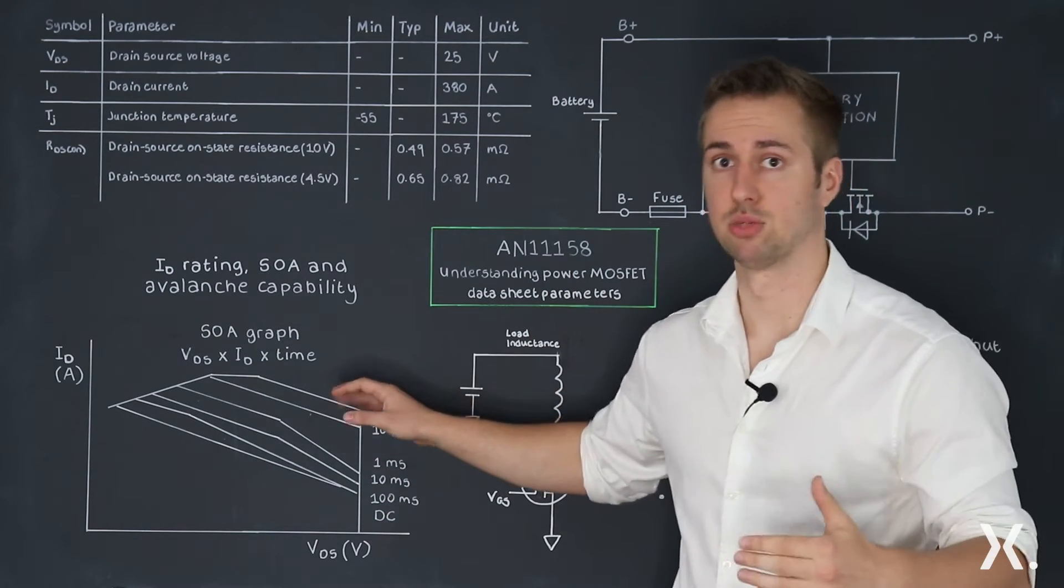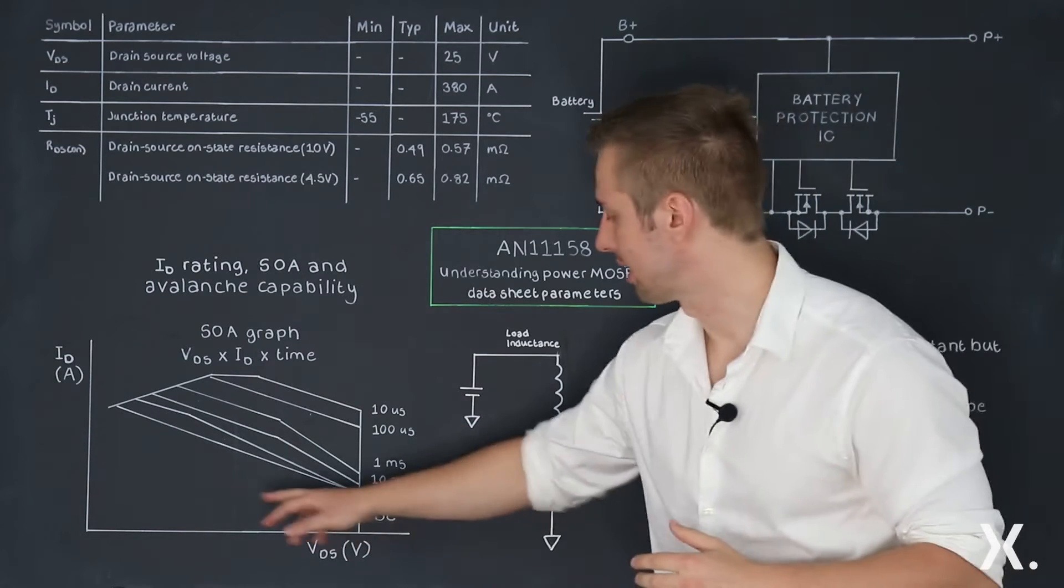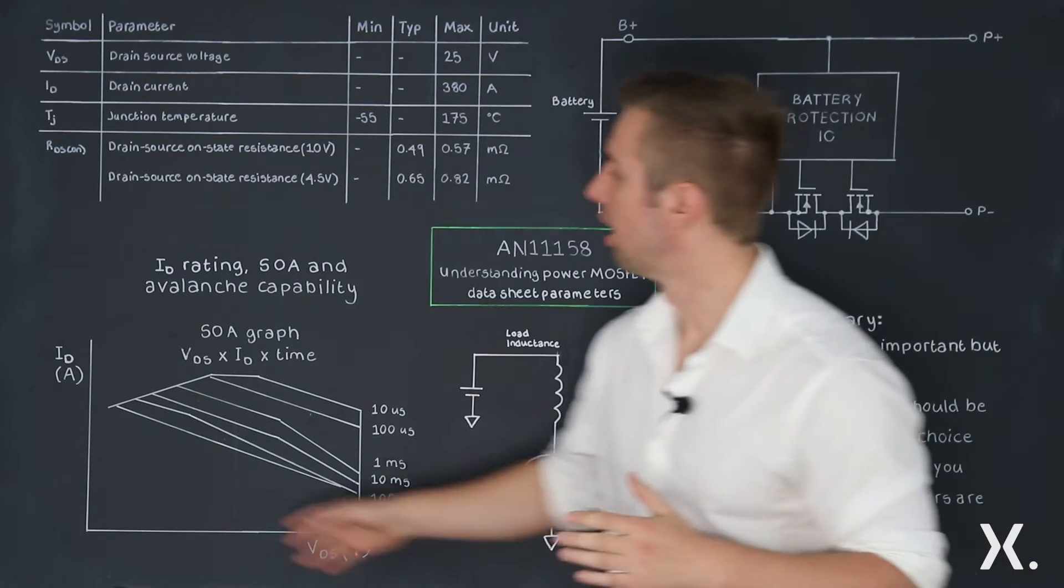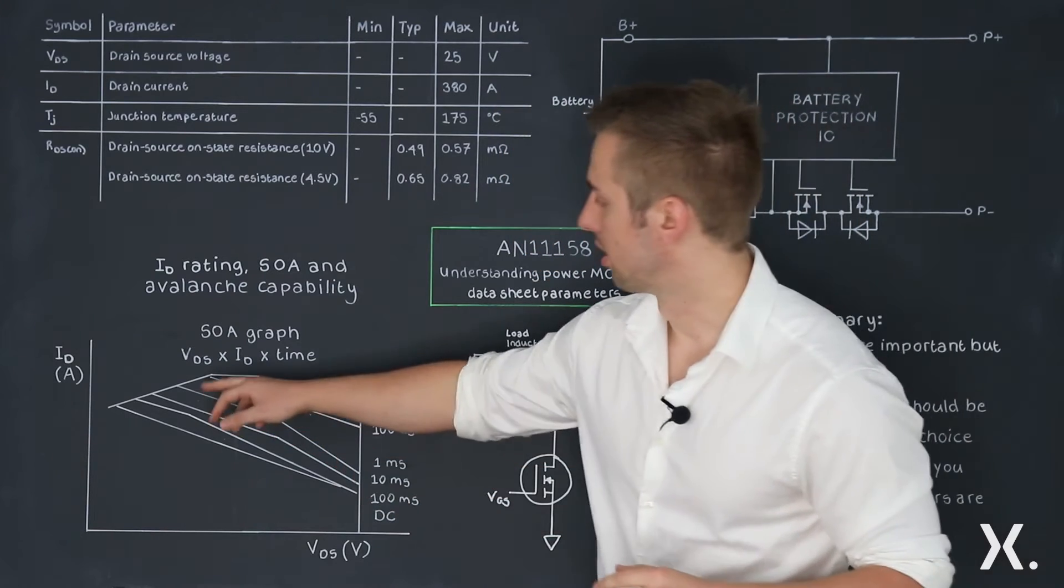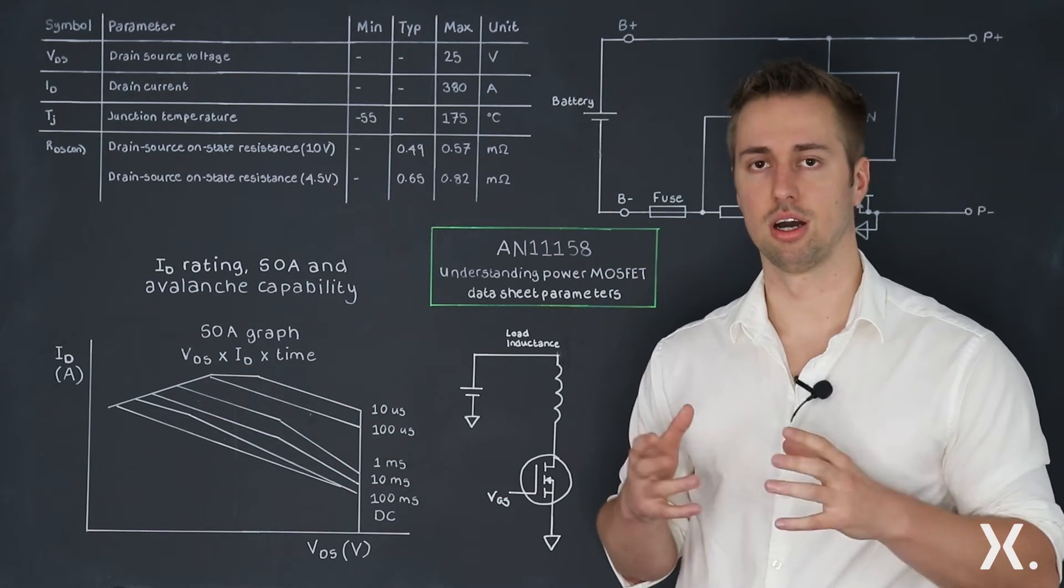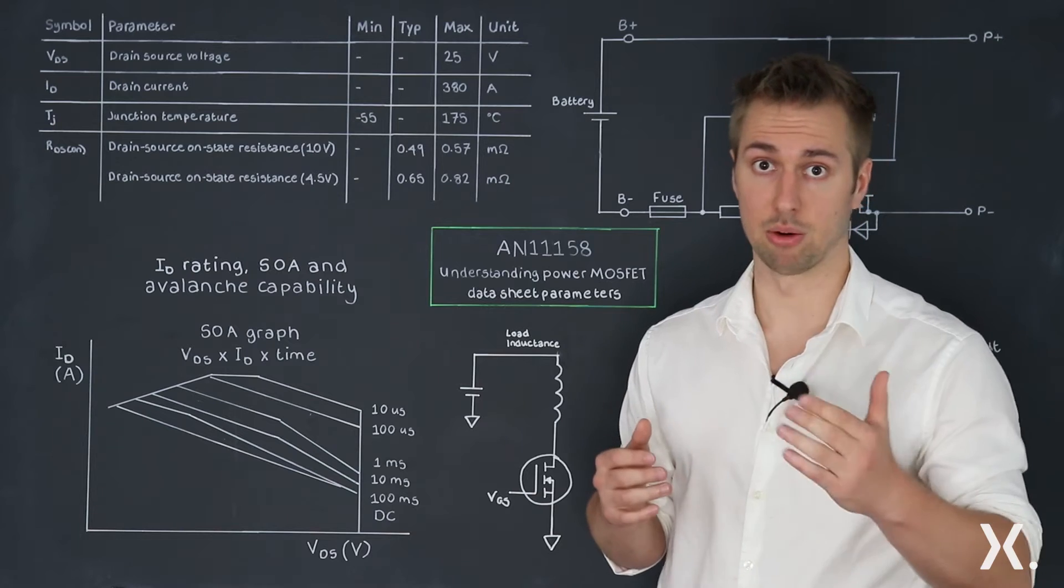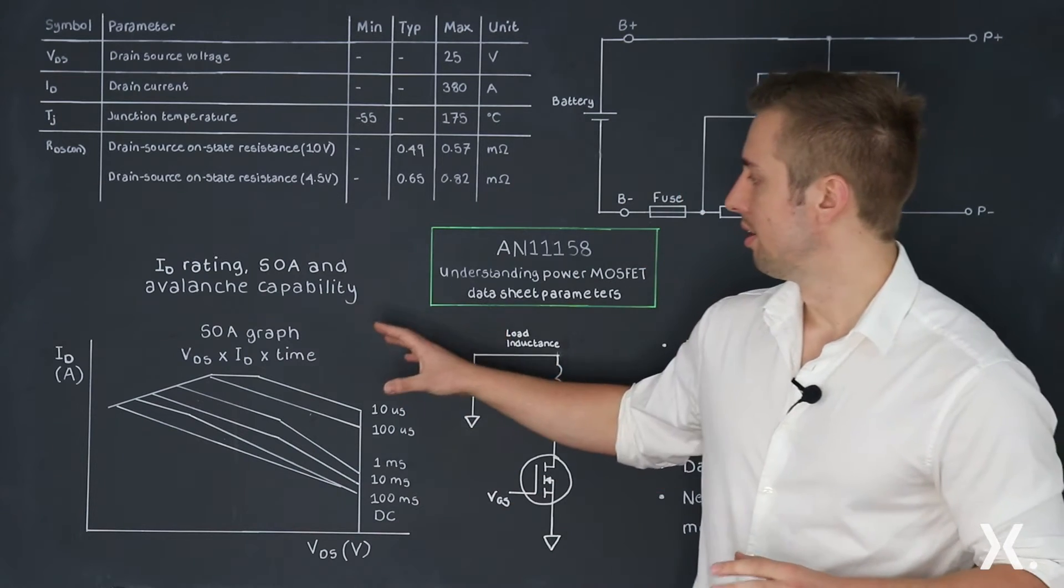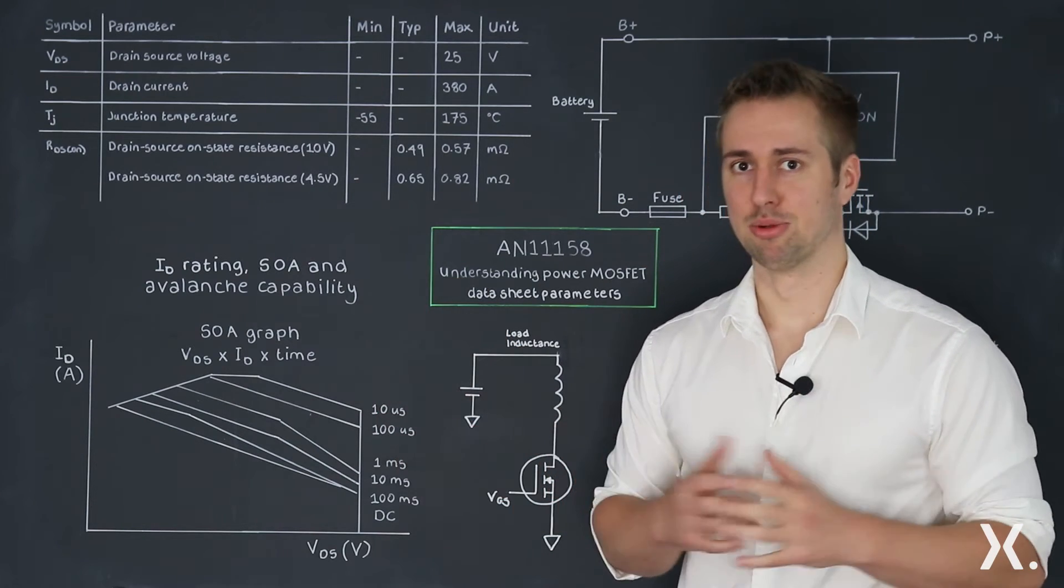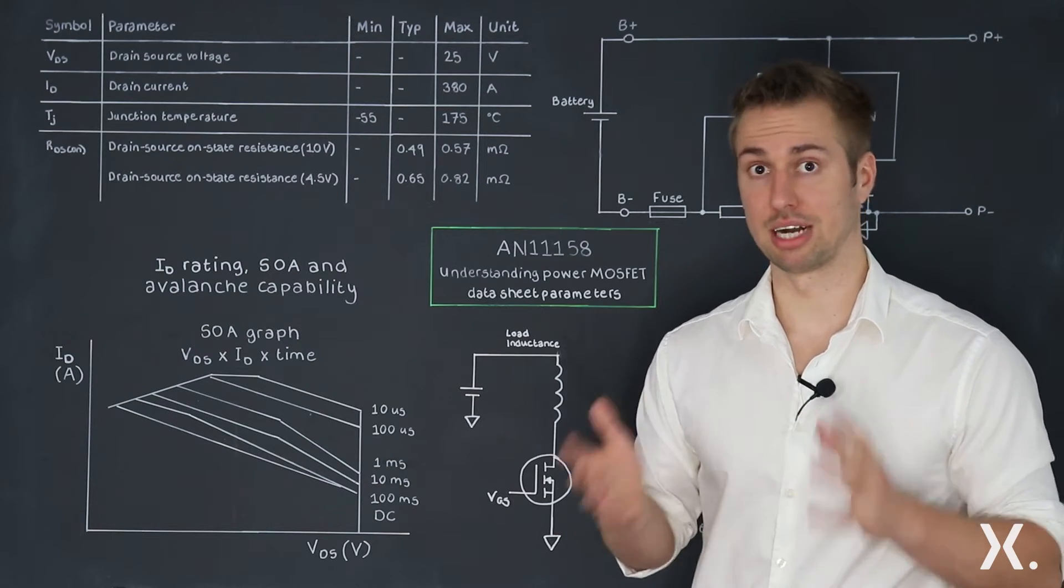The safe operating area graph is what you find in the data sheet where on the x-axis you have the drain source voltage and on the y-axis you have the drain current. These lines here show how much time the MOSFET is capable of handling this power.